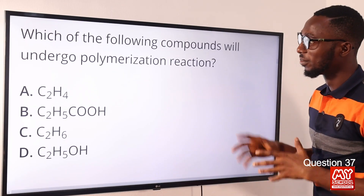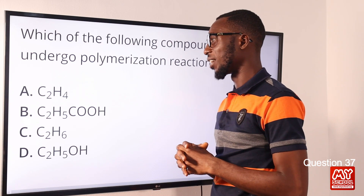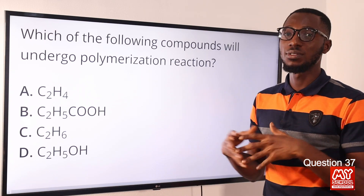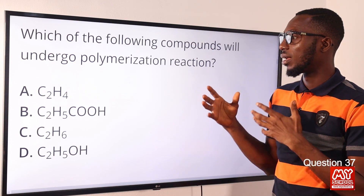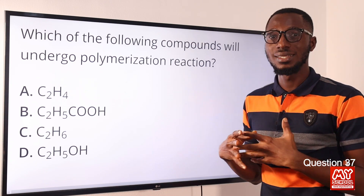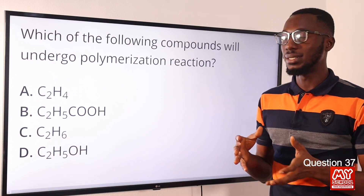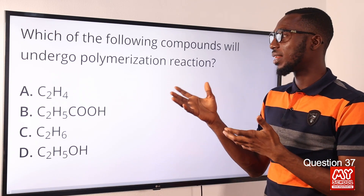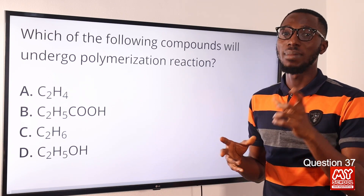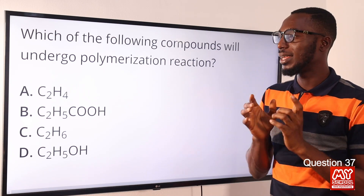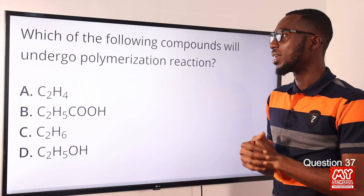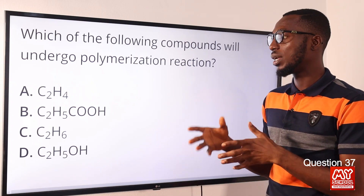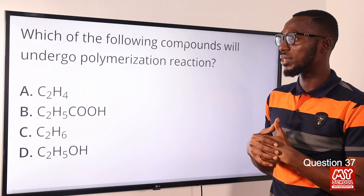Question 37. Which of the following compounds will undergo polymerization reaction? Polymerization involves two or more simple molecules linking together to form larger molecules. The hydrocarbons that undergo polymerization include ethyne — when ethyne undergoes polymerization, it forms the aromatic hydrocarbon benzene. Also, we have ethene, E-T-H-E-N-E, which undergoes polymerization to form polyethene or polychloroethene. The correct option here is option A for ethene.